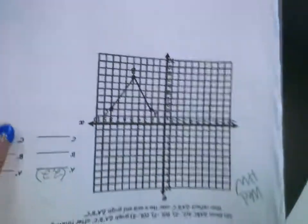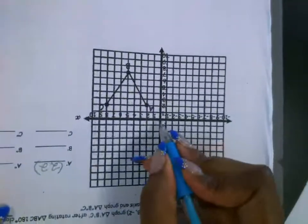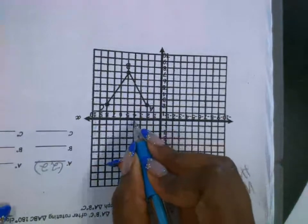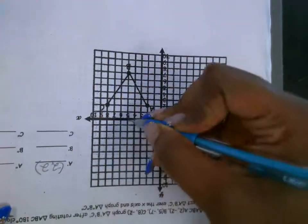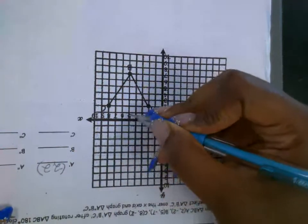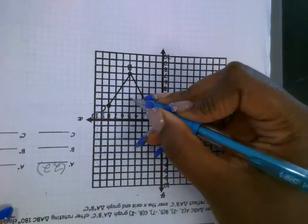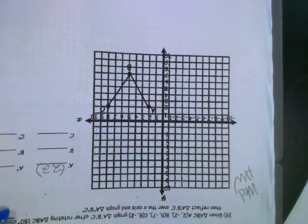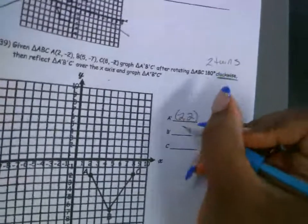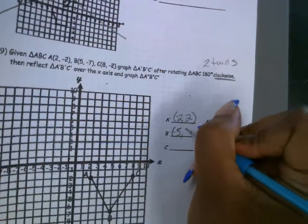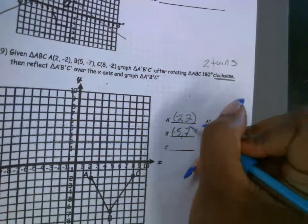That's 1, 2, and your B to the left 1, 2, 3, 4, 5 — that's to the left 5 and up 1, 2, 3, 4, 5, 6, 7. So negative 5 and positive 7.